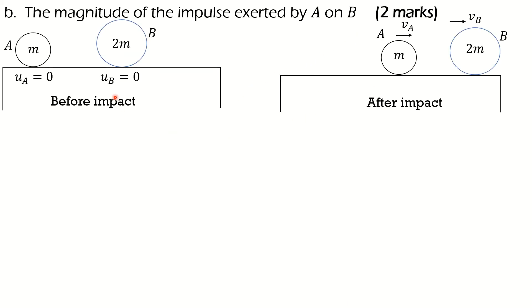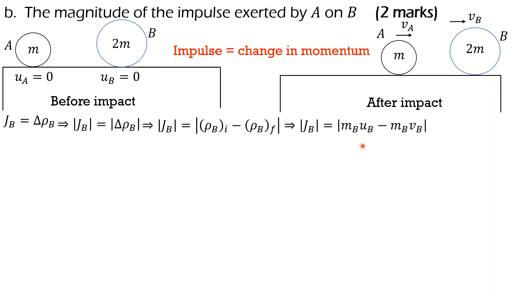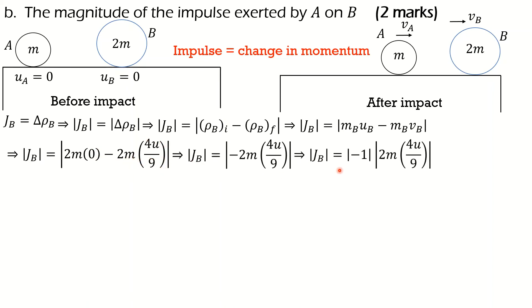Part B asks us to find the magnitude of the impulse exerted by A on B. Impulse equals the change in momentum, specifically the change in momentum of sphere B. Its magnitude is the difference between the final and initial momentum of B: mass of B times its final velocity minus mass of B times its initial velocity. We have 2M × 0 − 2M × (4U/9). Therefore the magnitude of the impulse exerted by A on B is 8MU/9, assuming M and U are positive.